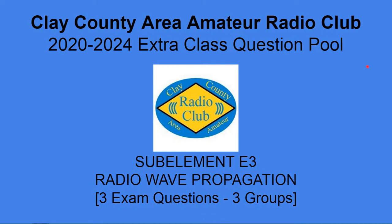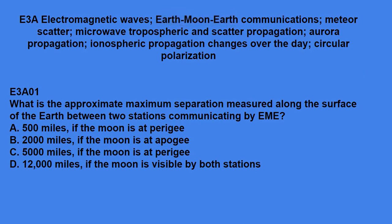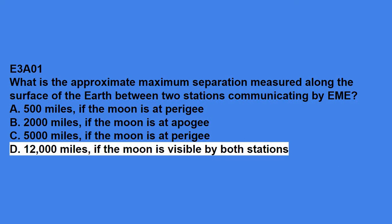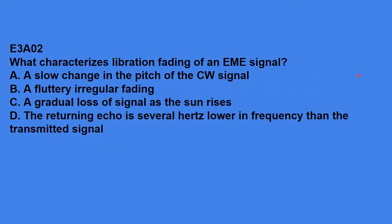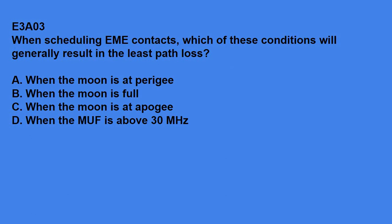E3 starts out as radio wave propagation. Three exam questions come from the three groups: E3A electromagnetic waves, earth-moon-earth communications, meteor scatter, microwave-tropospheric and scatter propagation, aurora propagation, ionospheric propagation changes over the day, and circular polarization. E3A01 says, what is the approximate maximum separation measured along the surface of the earth between two stations communicating by EME? The answer is 12,000 miles if the moon is visible by both stations. E3A02, what characterizes libration fading of an EME signal? The answer is a fluttery irregular fading. E3A03, when scheduling EME contacts, which of these conditions will generally result in the least path loss? The answer is when the moon is at perigee.